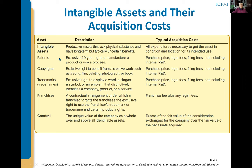So if you cannot capitalize internal R&D, how do intangible assets get onto the books? We may buy patents developed by other companies, or we can capitalize filing fees for a patent. The legal fees to defend a patent can be expensed. Same with copyrights — think of Netflix buying movies: that purchase price gets recorded as a copyright. We'll talk about goodwill separately, as it's a whole different subject.